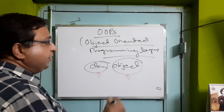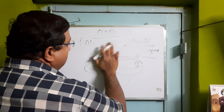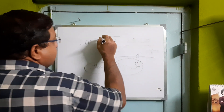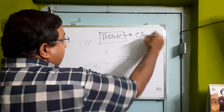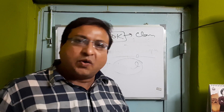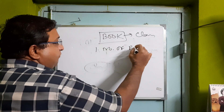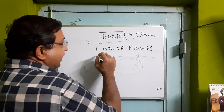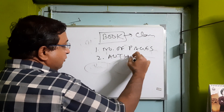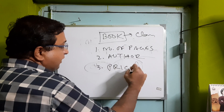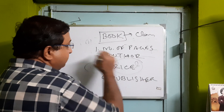Suppose, as I mentioned, a book is a class. It consists of some characteristics. What are those characteristics? The number of pages, the author, the price, and the publisher — so these are the characteristics of a book.